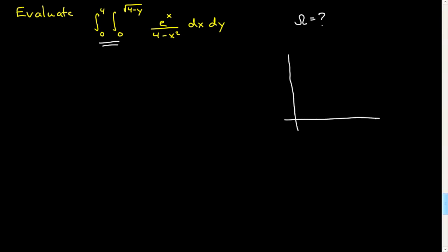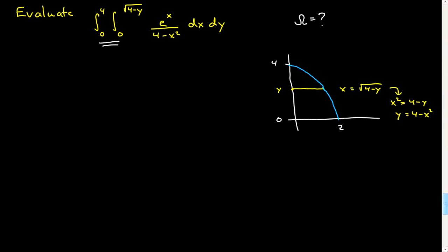So let's draw it. y is on the outside, so y goes between 0 and 4. For each y, x starts at 0 and goes up to the point on the curve x equals the square root of 4 minus y. We prefer to think of it as x squared equals 4 minus y, that is y equals 4 minus x squared, which we can understand more easily. We see the upper bound is that parabola, which comes down and hits 2. From that, we now know what our domain is.